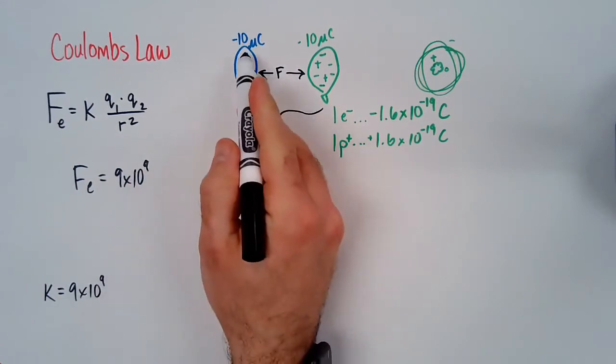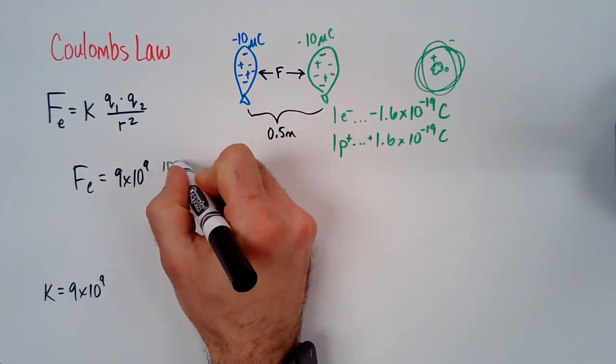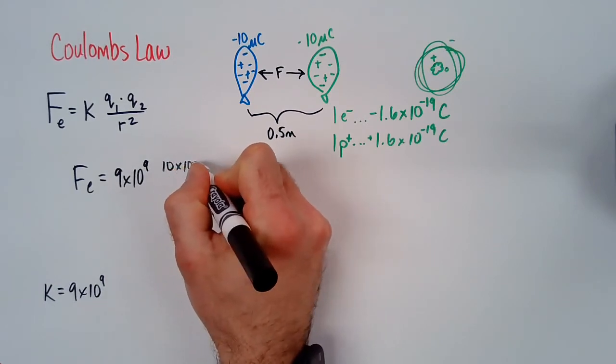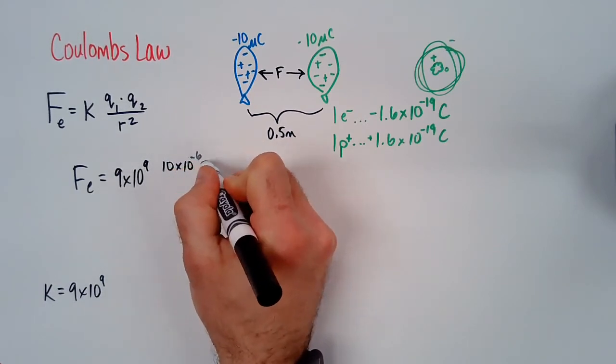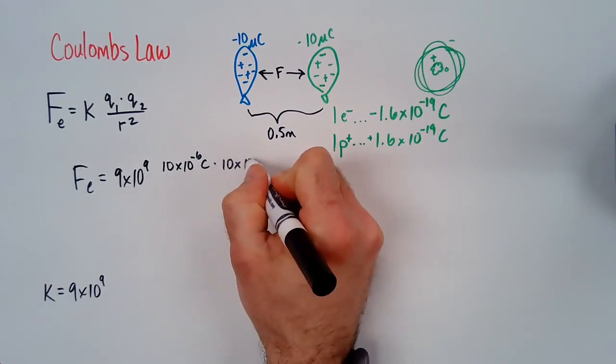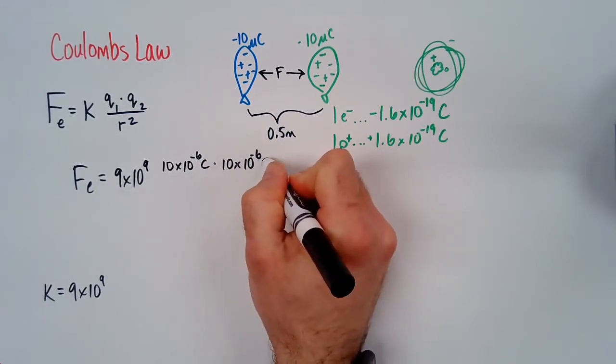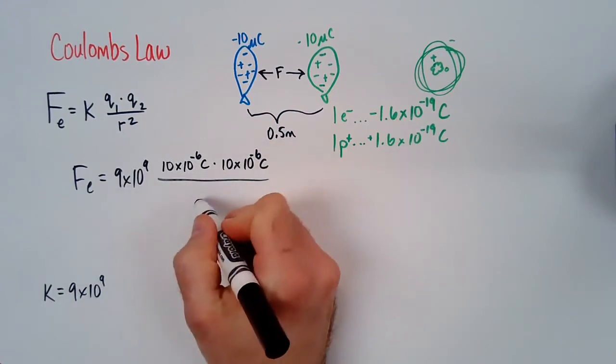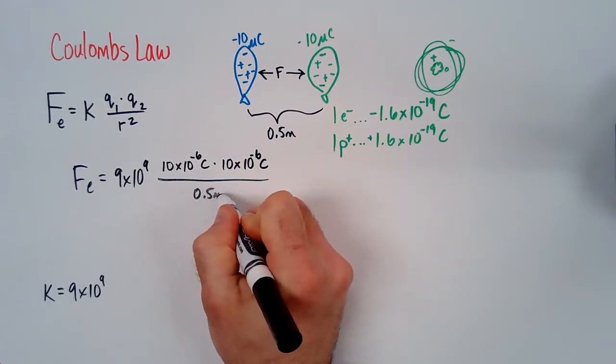Q1, 10 micro Coulombs. So 10, and then micro means millionth, so times 10 to the negative 6 Coulombs, and then another 10 micro times 10 to the negative 6 Coulombs, all divided by the distance squared.